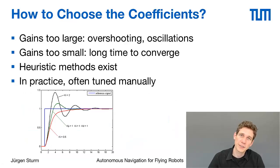Another interesting question is how to choose the coefficients. The problem here is that if you make the gains too large, it can easily lead to overshooting and oscillations. However, if you make the gains too small then it might take a very long time to converge. A good heuristic is to start with small gains and then incrementally increase them until you see a good behavior. If you see oscillations you know that you've made them too large.